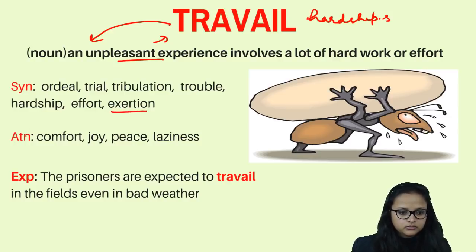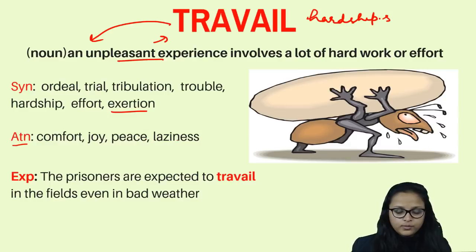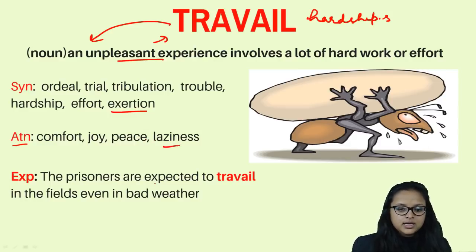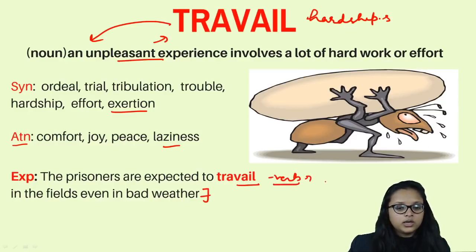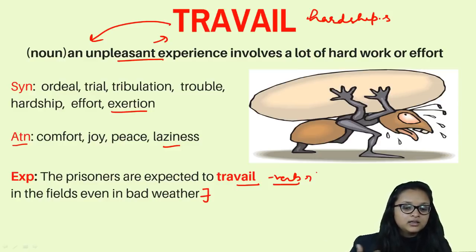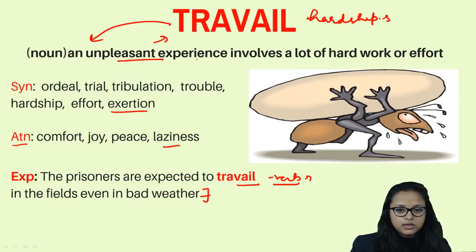Synonyms for travail are: ordeal, trial, tribulation, trouble, hardship, effort, and exertion. Antonyms are: comfort, joy, peace, and laziness. Example sentence: 'The prisoners were expected to travail in the fields even in bad weather.' Here travail is used as a verb meaning to work hard. You can use travail as both a noun and a verb.